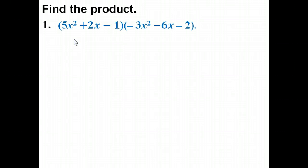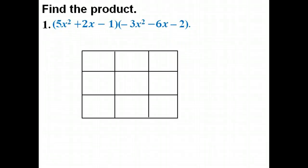I'm going to create a box and the dimensions of the box are going to be however many terms there are. In other words, this one has three terms so it's going to be at least a three by something box, and this one has three terms, so this will be a three by three box. So three up and down, three side to side.